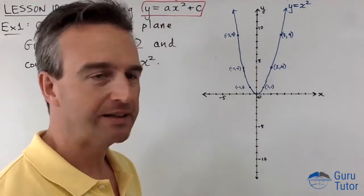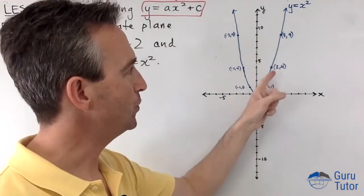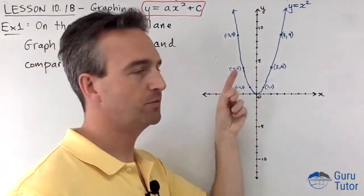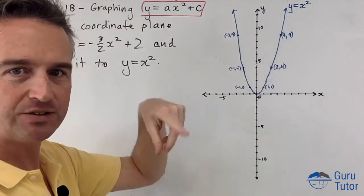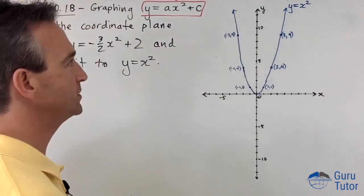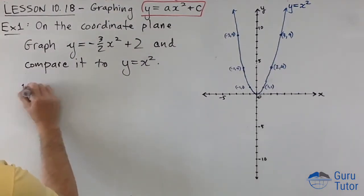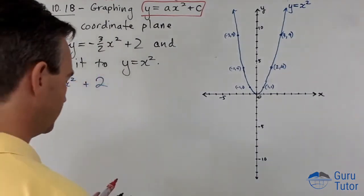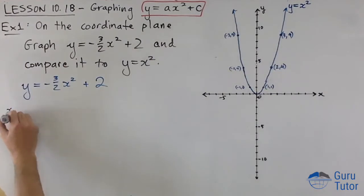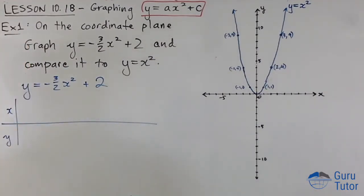So hopefully you can draw y equals x squared quite easily now. You're just going to remember the points: 1,1; 2,4; 3,9; minus 1,1; minus 2,4; minus 3,9. Hopefully you can do those in your head and just graph it quite quickly now. We're going to draw it and compare it to that one. So to graph this, y equals negative 3 over 2 x squared plus 2, we're going to use a table like before. Let's see if we can figure out what this c value is representing.